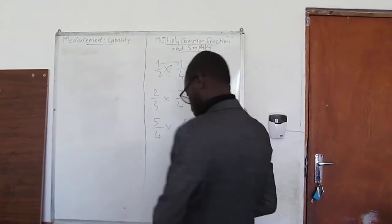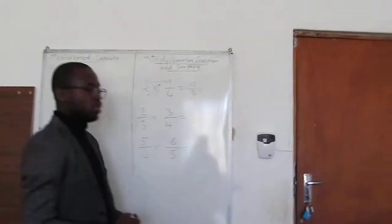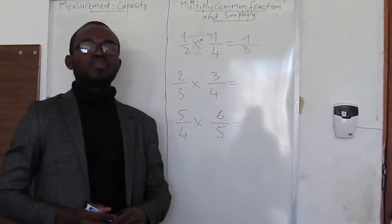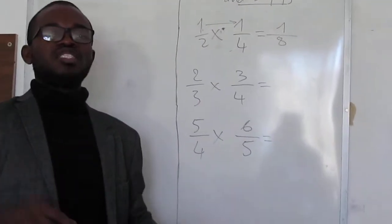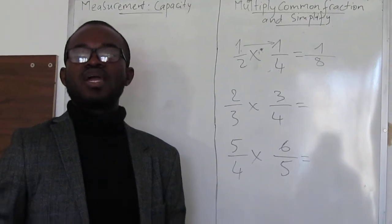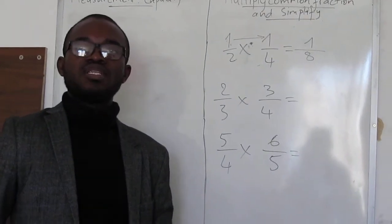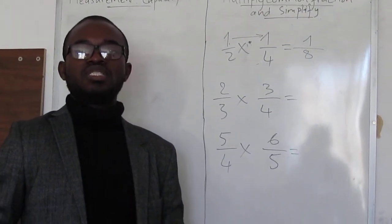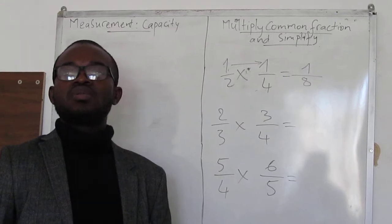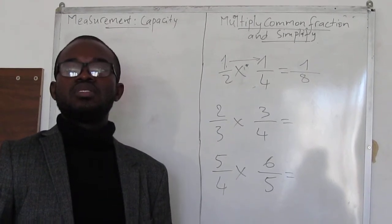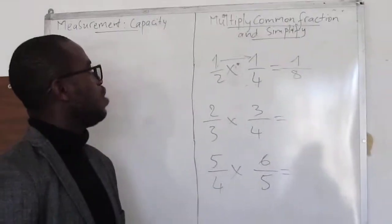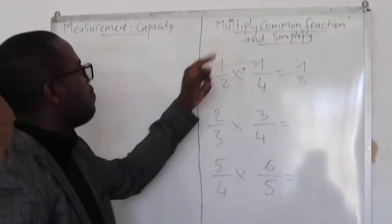Hello, we're at Just Space Academy. This is a grade 4, grade 5, and grade 7 class. Just Space Academy is a school that is located at Somerset West. So today we are at grade 7.